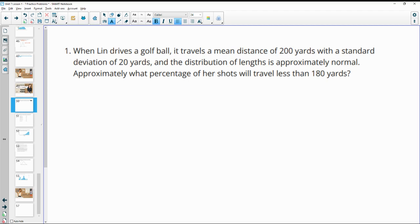Number one: When Lynn drives a golf ball, it travels a mean distance of 200 yards with a standard deviation of 20 yards. And the distribution of lengths is approximately normal. Approximately what percentage of her shots will travel less than 180 yards?